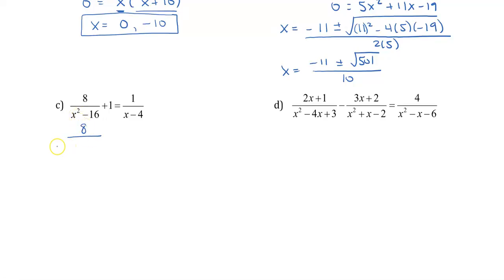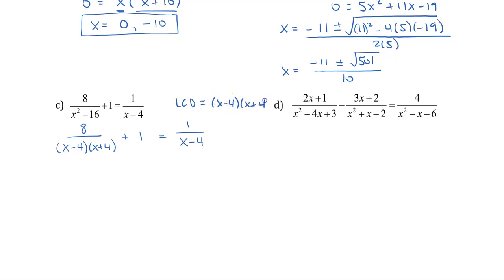For the next question I'll factor the denominator first. I get (x-4)(x+4). The +1 term is separate with no denominator. Now I can see that my LCD is (x-4)(x+4). Multiplying the first term, the whole denominator cancels leaving 8. Multiplying the second term, nothing cancels since there's no denominator, so I have (x-4)(x+4). For the right-side term, the (x-4)'s cancel and I'm left with (x+4).